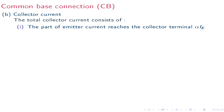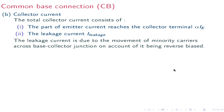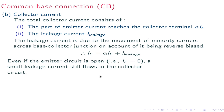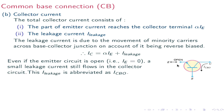The total collector current can be calculated as follows. It consists of a part of the emitter current that reaches the collector terminal, which is alpha times Ie, plus the leakage current. Leakage current is due to the movement of minority carriers across the base-collector junction, since the base-collector junction is reverse biased. Therefore Ic equals alpha Ie plus I-leakage. Even if Ie equals zero, a small leakage current flows in the collector circuit, called Icbo — the collector-base current with emitter open.